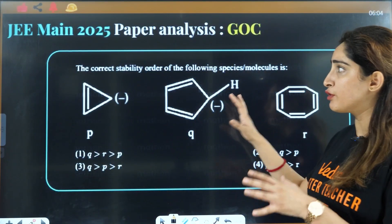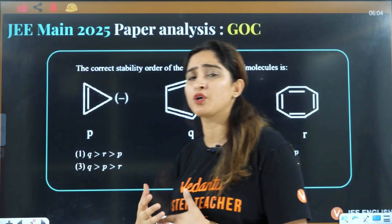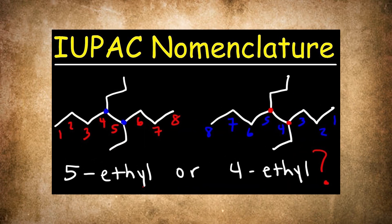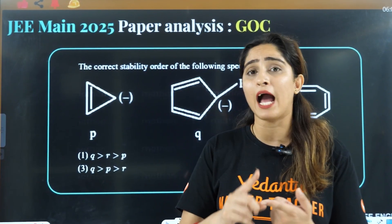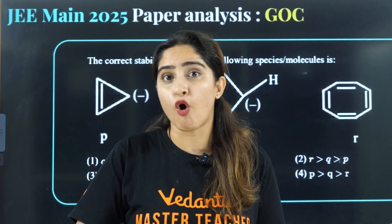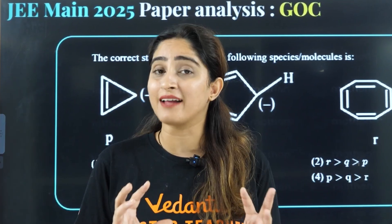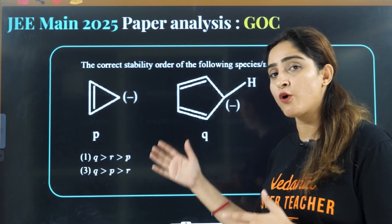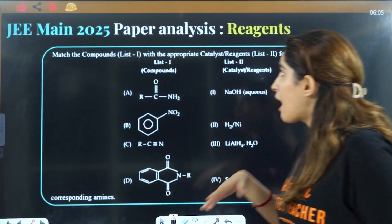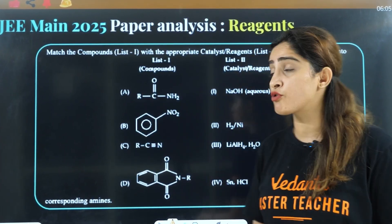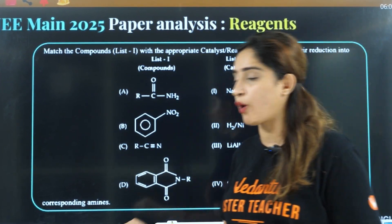From GOC, they firstly ask questions on stability of intermediates. For that, you need to be very good in IUPAC naming and electron displacement effects like hyperconjugation, resonance, backbonding, dancing resonance, inductive effect, and aromaticity. All these effects and their collective priority should be on your tips. Based on this, they also ask acidity and basicity.